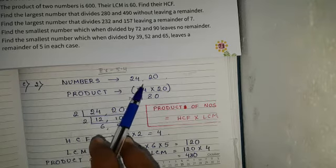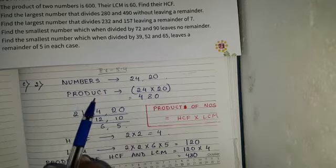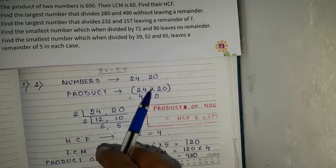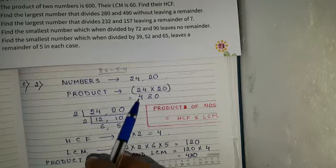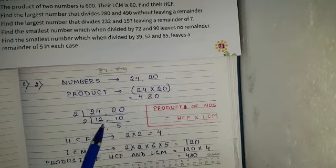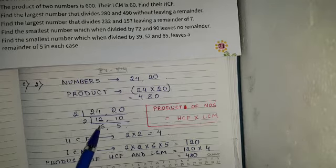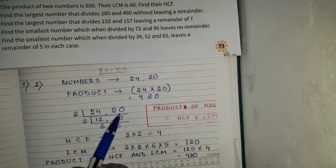First we will find the product of 24 and 20: 24 into 20 equals 480. Now we will find the HCF and LCM. The process we are using here is the division method.